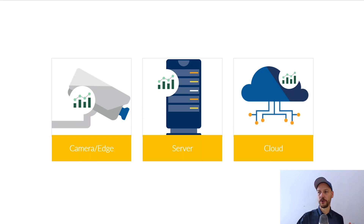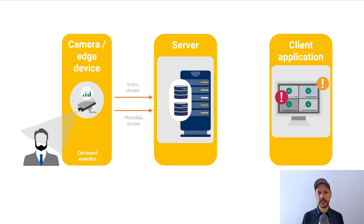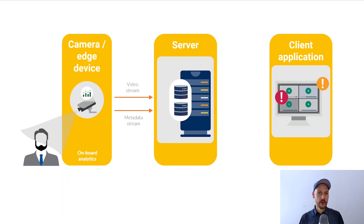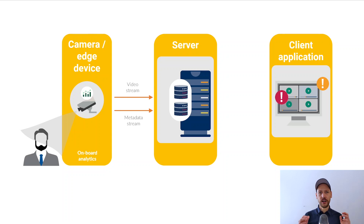Let's start with the camera or edge device. When you run it on the camera or an edge device right after the camera, one big advantage is that you can reuse hardware you might already have purchased. Lots of cameras have very powerful chips where you can run analytics workloads, so you do not have to invest in additional server hardware. There is also the theoretical possibility to reduce bandwidth by only sending video when something is happening, but in reality that's not really an advantage since you want to send the video for recording anyway. The real advantage is hardware cost savings.